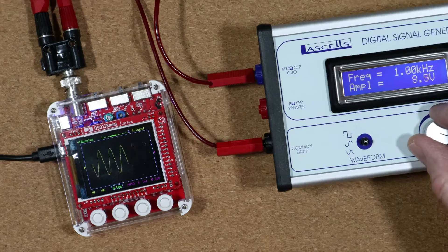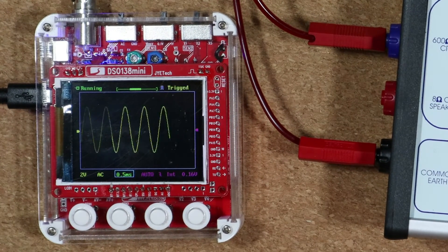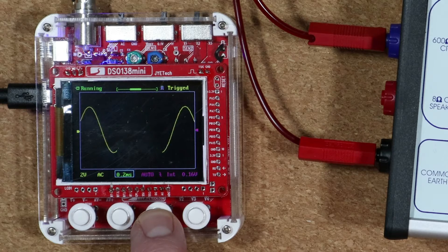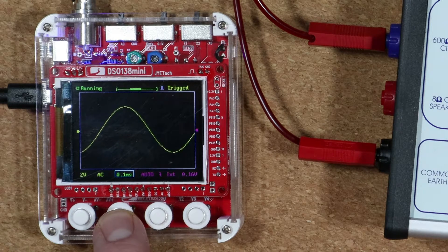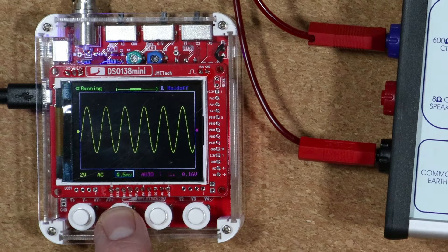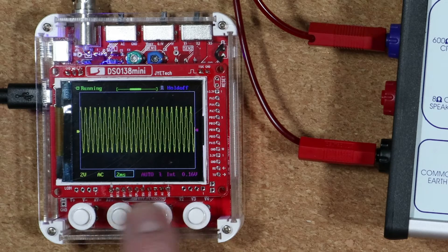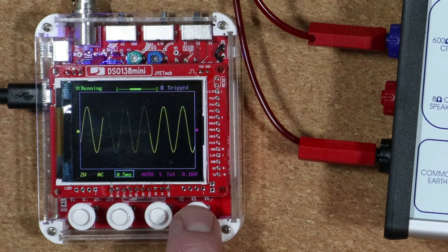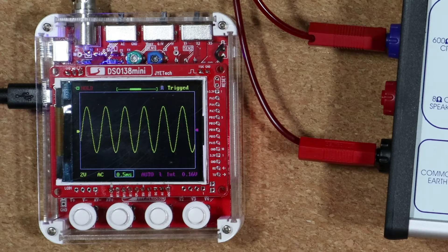Hi folks, today I'm going to take a closer look at the DSO138 mini, which is a portable digital storage oscilloscope from Jitech. It's something I use when I'm working with the BBC microbit or Arduino, when I'm investigating output voltages from various sensors, although it's got plenty of other uses too.